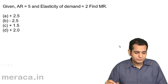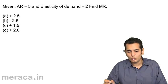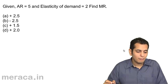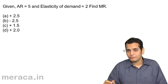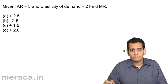Next question. Given AR equals 5 and elasticity of demand equal to 2, find MR. MR will be positive 2.5, negative 2.5, positive 1.5, or positive 2.